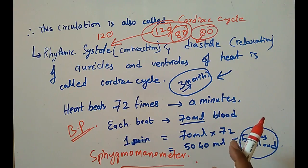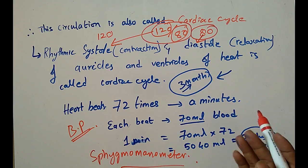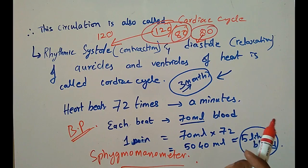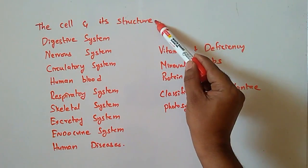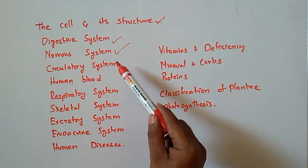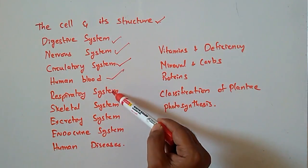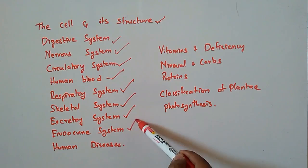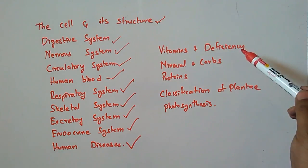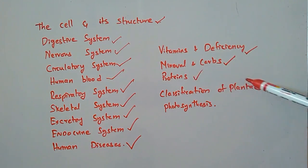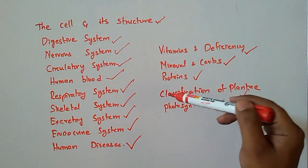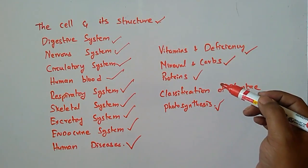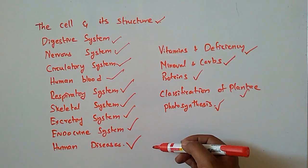For the PDF of this class and other classes I have taught, I have given a link in the description box where you can find biology notes PDFs written by me. Topics covered include: the cell and its structure, digestive system, nervous system, circulatory system, respiratory system, skeletal system, excretory system, endocrine system, human diseases, vitamins and deficiencies, minerals, carbohydrates, proteins, plant classification, and photosynthesis.